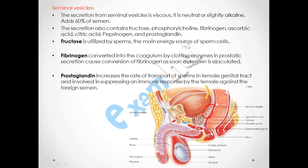The sperm passes through the vas deferens, which joins with the seminal vesicle duct at a point, adding a viscous liquid to the sperm and providing motility. The secretion from the seminal vesicle is viscous, neutral, and slightly alkaline, constituting 60% of the semen. Its constituents include fructose, phosphorylcholine, fibrinogen, ascorbic acid, citric acid, pepsinogen, and prostaglandin.